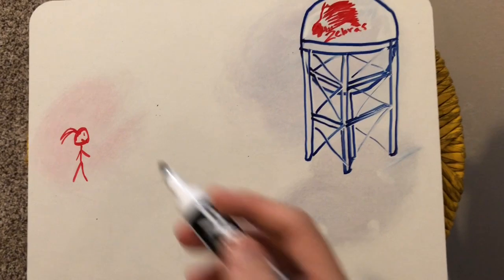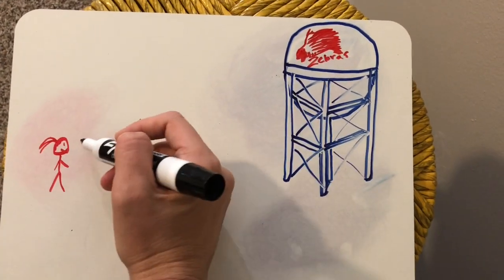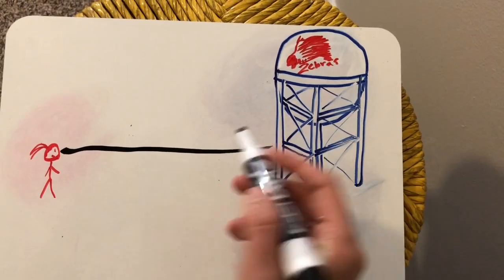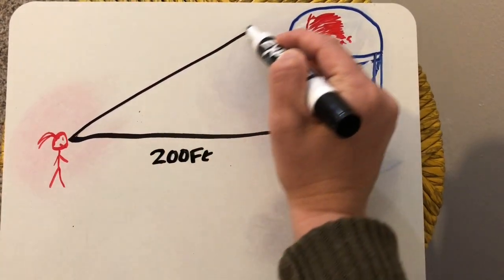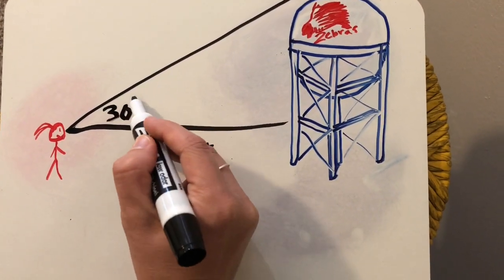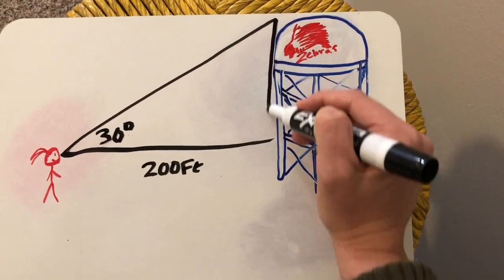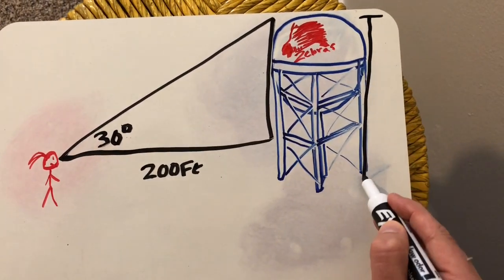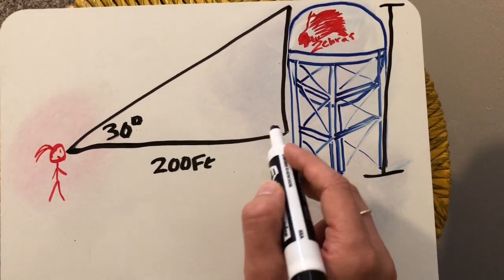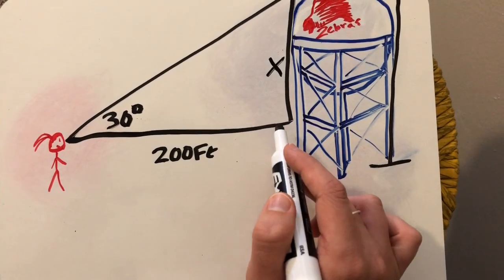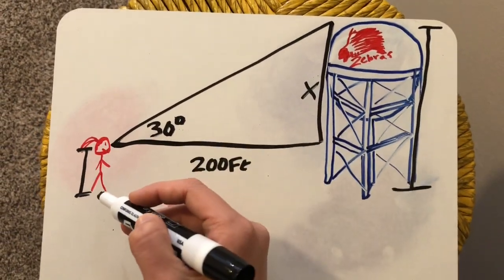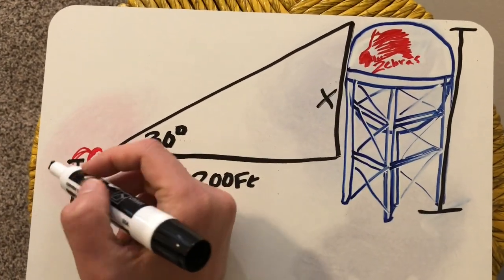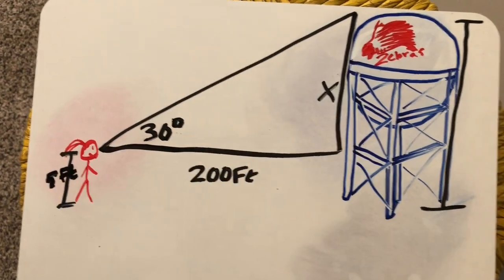Now that we've finished our fieldwork, it's time to do some trigonometry. It's always smart to draw a picture first. The distance from me to the water tower is about 200 feet, and from my line of sight to the top of the water tower is about a 30-degree angle of elevation. This will only give us the height from my eyesight to the top, so we'll need to add my height — about five feet from my feet to my line of sight — at the end.